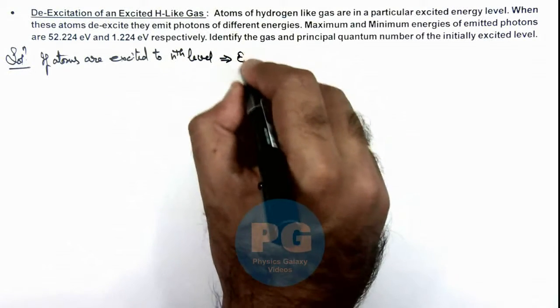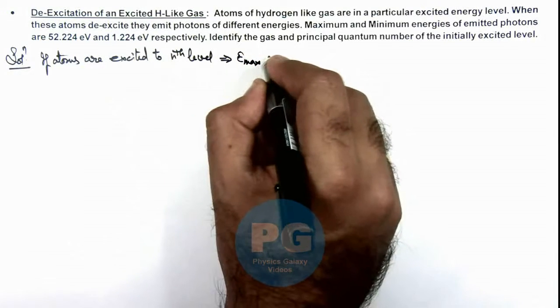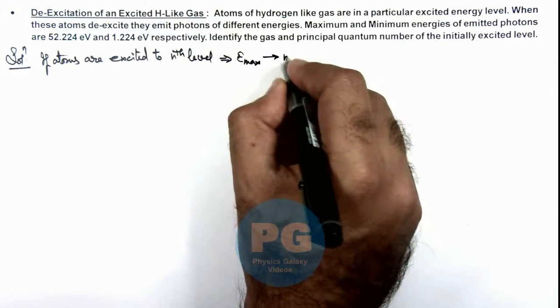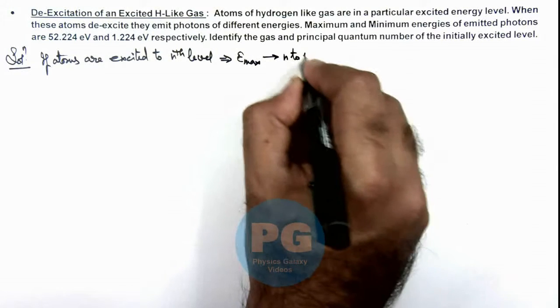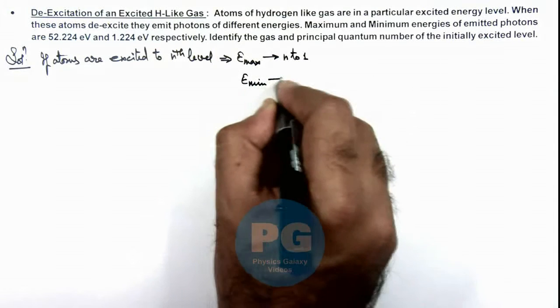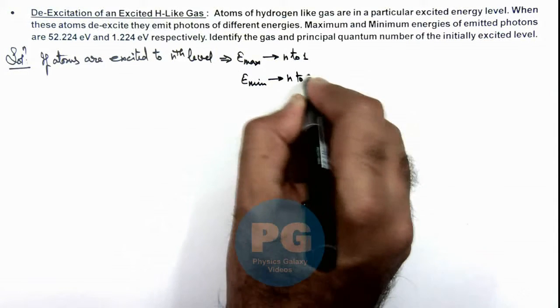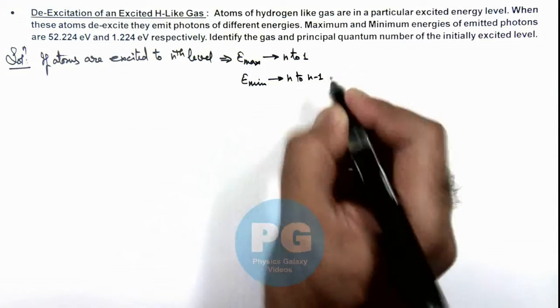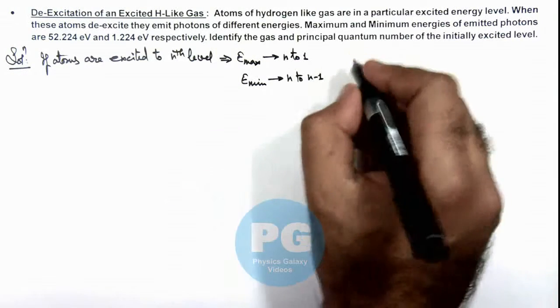Maximum energy emitted will be corresponding to n to 1 level, and minimum energy emission will be corresponding to n to n-1 level. So if we calculate the energy, we can see.